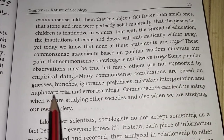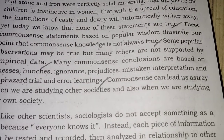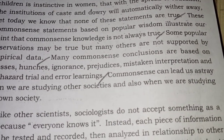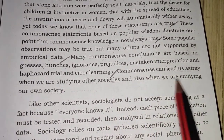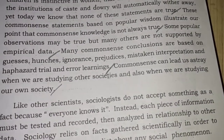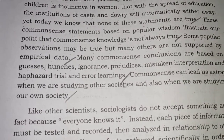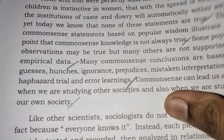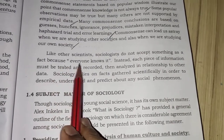Some popular observations may be true, but many others are not supported by empirical data. Many common sense conclusions are based on guesses, hunches, ignorance, prejudices, mistaken interpretations, and haphazard trial-and-error learning. Common sense can lead us astray when studying other societies and also our own. For example, studying a tribal community in Australia would reveal living patterns completely different from what someone born and raised in India might assume.